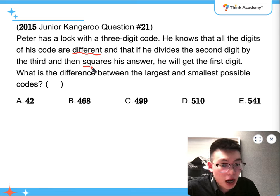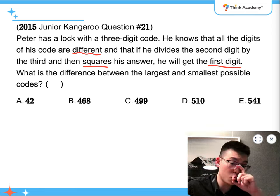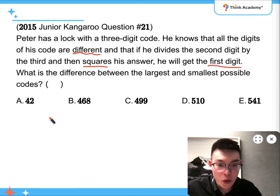First of all, after squaring his answer, he will get the first digit, meaning that the first digit itself is a square number. So it can be 9, 4, or 1, right?